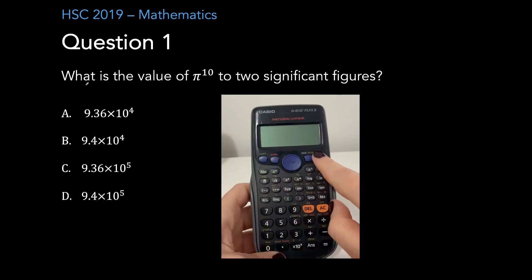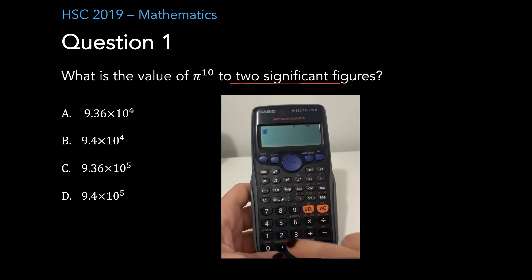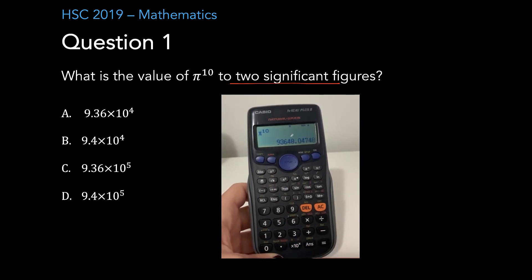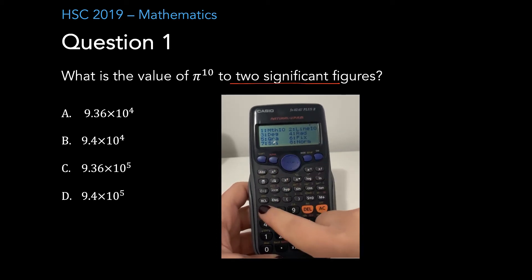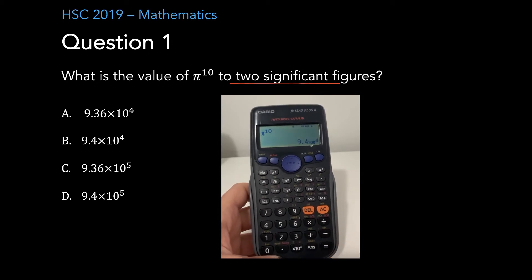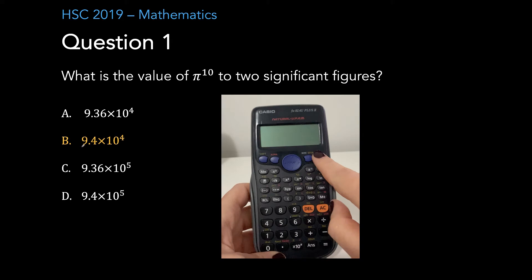Question one. It's asking you to find what is the value of pi to the power of 10 correct to two significant figures. All you need to do is simply plug that into your calculator so you have pi to the power of 10. You get a value, get it into sci mode and then select how many significant figures you want and you'd get 9.4 times 10 to the power of 4, leaving you with the answer B.